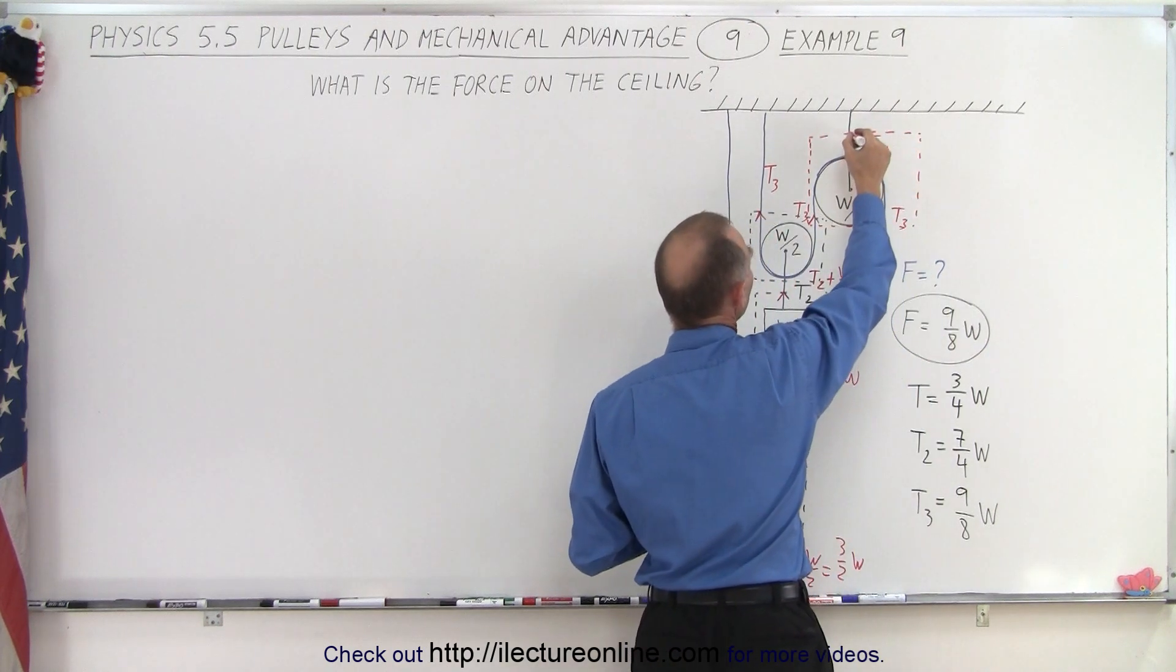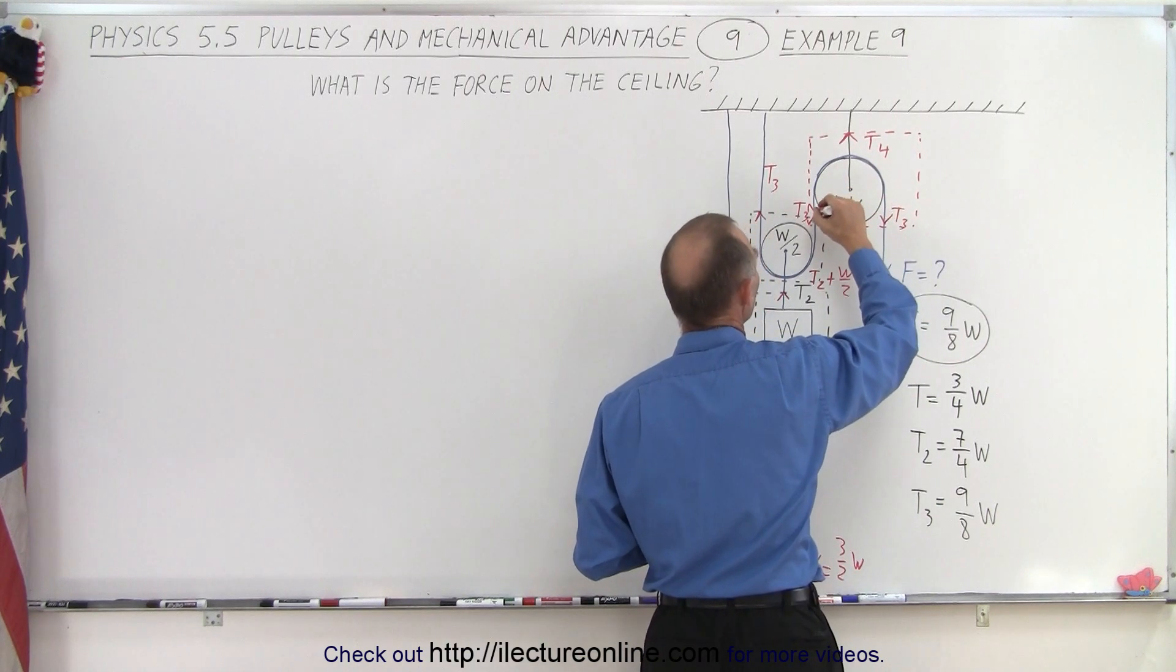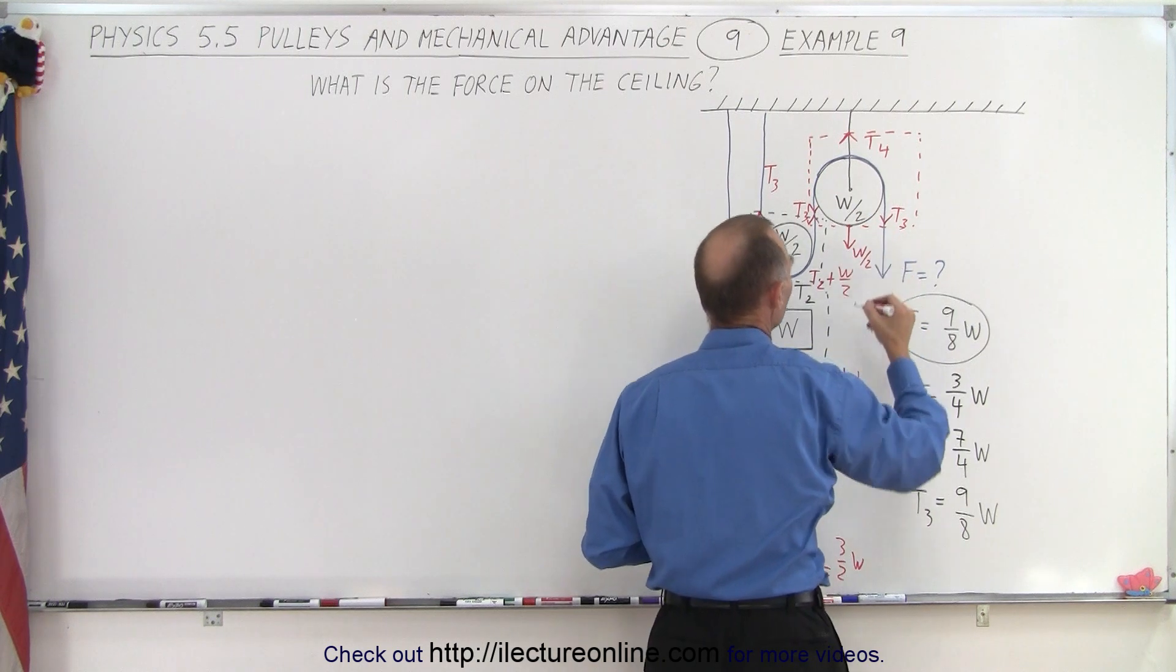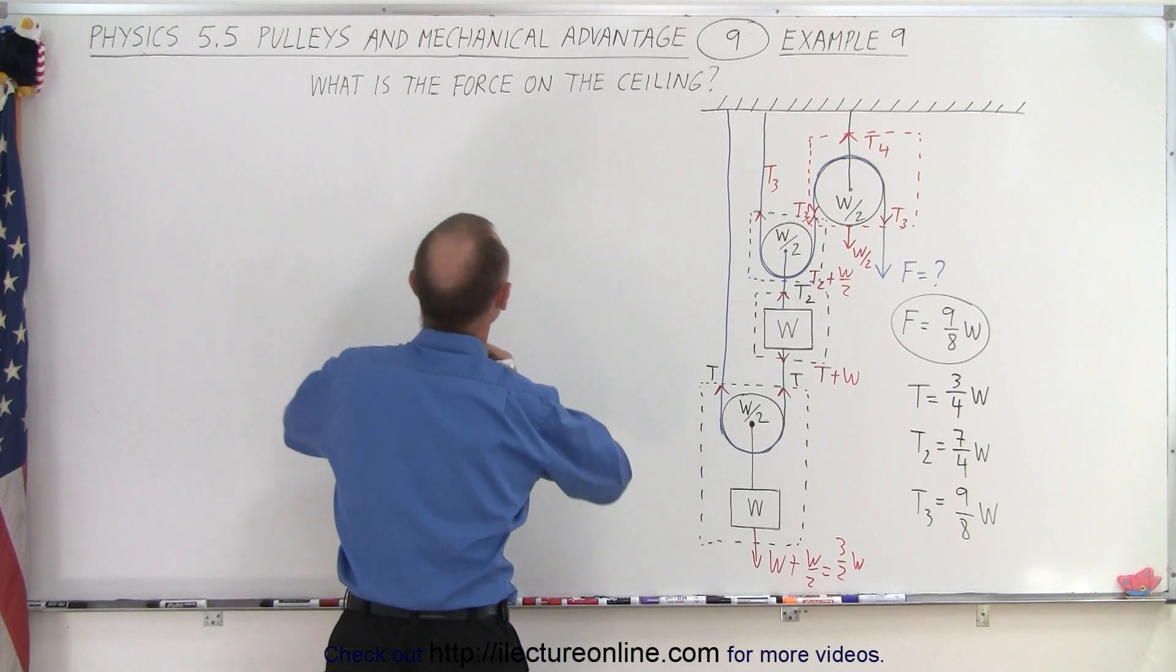And so we have the tension T4 pulling up. Downward, we have the T3 pulling this way, T3 pulling this way, but we also have the weight of the pulley, which is W over 2. Which means that trying to find T4, we need to do the following.